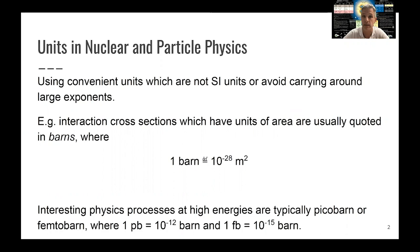One example is the introduction of a new unit for cross-sections, which describes an area. And that unit is barn. We talk about cross-sections in barns or femtobarns or picobarns. And one barn is defined as 10 to the minus 28 square meters.